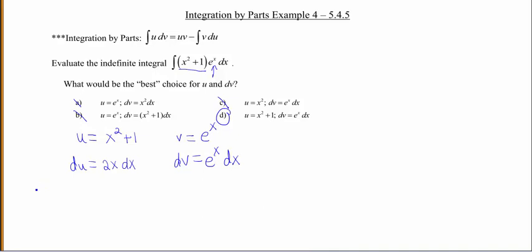Okay, so let's put our pieces together then in our parts formula. So our original integral was x squared plus 1 times e to the x dx. So that's gonna equal u, which is x squared plus 1, times v, which is e to the x, minus the integral of v, which is e to the x, du, which is 2x dx.